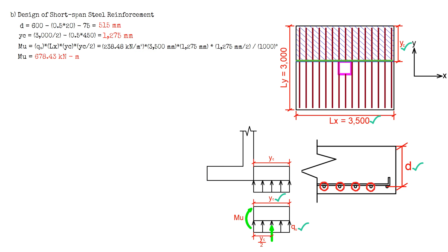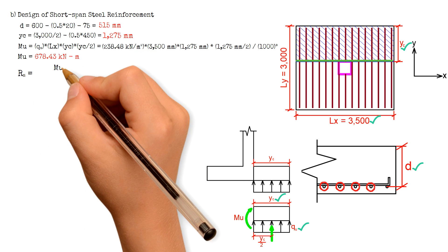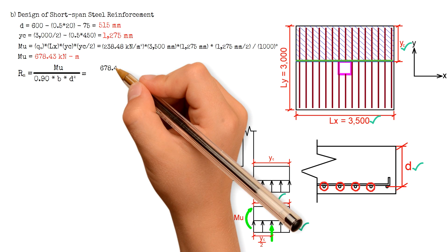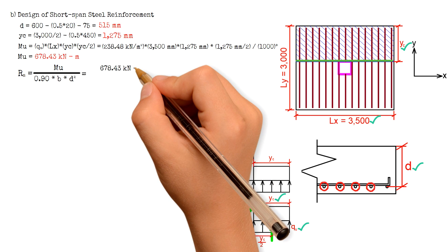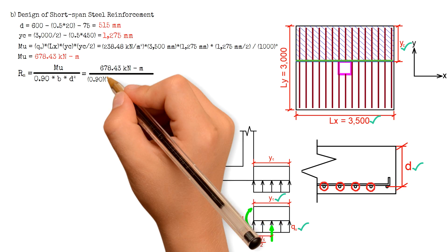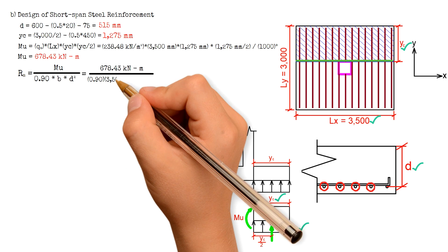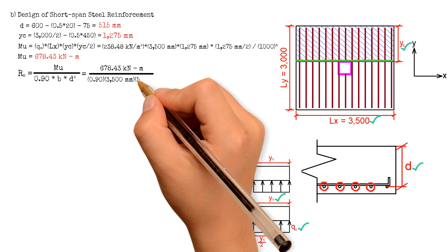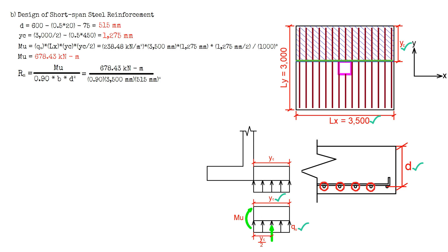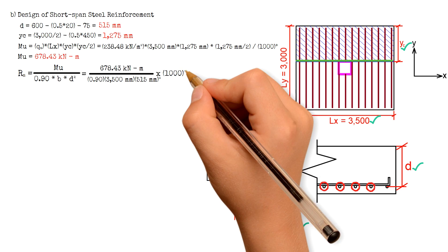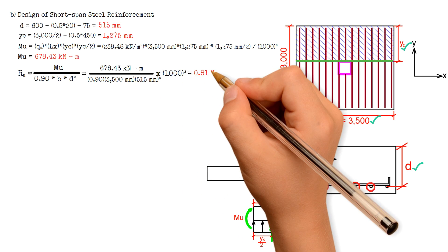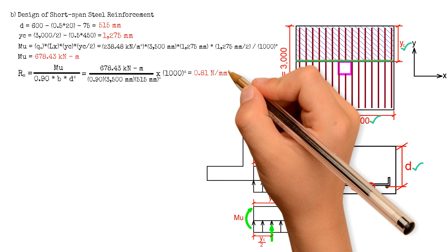Then we will calculate for R sub N, which equals the moment MU 678.43 kNm, divided by 0.9 times the width B 3500 mm, times the square of the effective depth D 515 mm. That gives us a value of 0.81 N per square millimeter.